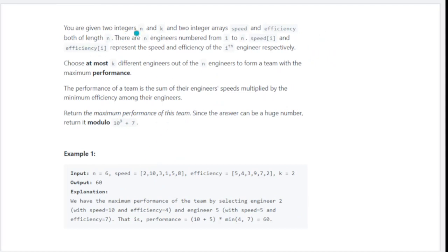The question says you have two integers n and k, as well as two integer arrays: speed and efficiency, both of length n. Out of these n engineers numbered from 1 to n, where speed[i] and efficiency[i] represent the speed and efficiency of that engineer, you have to choose at most k different engineers to form a team with the maximum performance.